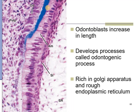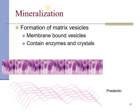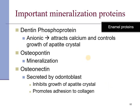The odontoblasts increase in length and develop processes called odontogenic processes, also known as Tomes fibers. They are rich in Golgi apparatus and rough endoplasmic reticulum. Once these odontoblasts differentiate, they lay down a layer of collagen matrix called predentine. This matrix is then deposited with crystals. These proteins and crystals together play an important role in mineralization. The key mineral protein is dentine phosphoprotein, which is anionic and attracts calcium, controlling the growth of hydroxyapatite crystals. Once initiation has taken place, osteopontin increases the mineralization.